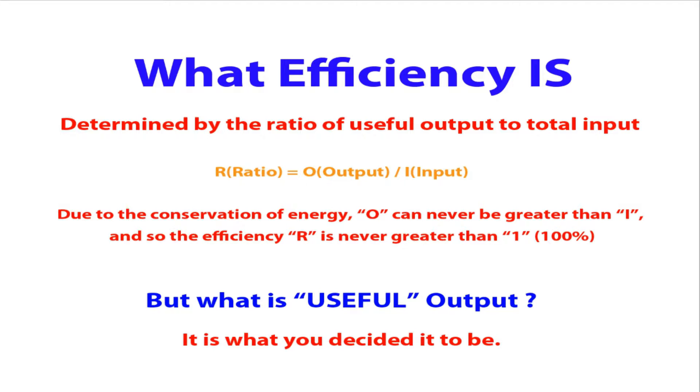So, what is efficiency? Well, it's determined by the ratio of useful output to total input power. That's nicely worded I guess. So that is ratio equals the output power divided by the input power. So, due to the conservation of energy, O, or the output, can never be greater than I, which is the input. And so efficiency, R, is never going to be greater than 1. And that's a law. There we go. That's a statement. That's a fact. Unless, of course, you believe in a number of conspiracy theories. But that's not what this video is about. And we'll assume that that is a fact.